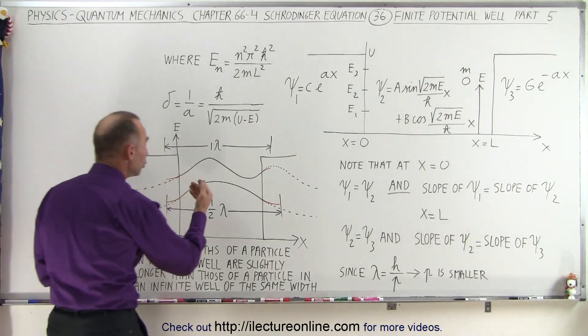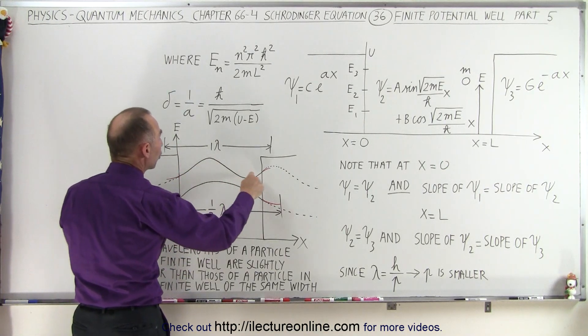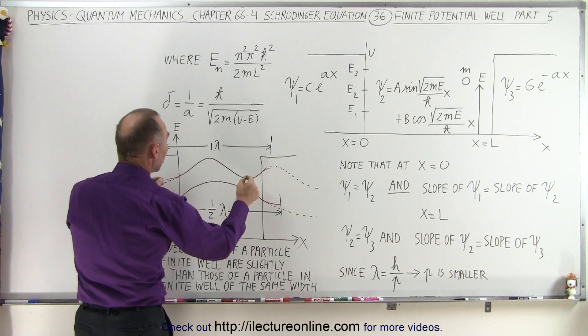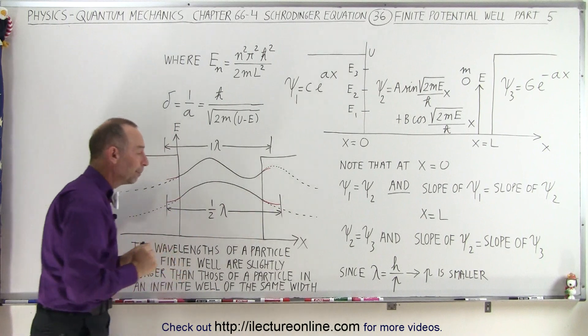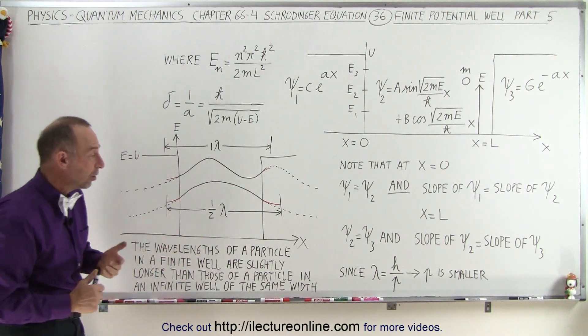For energy level 2, we know that the wavelength normally should equal the length of the well, but in a finite well, we know that the wavelength is slightly longer than the width of the well.